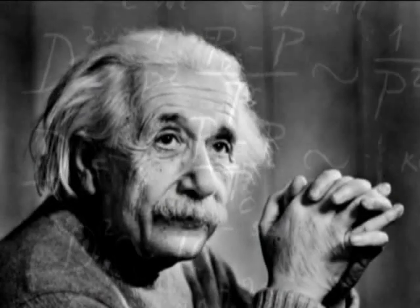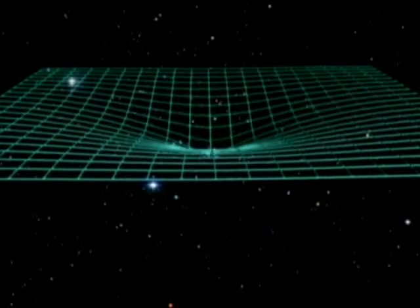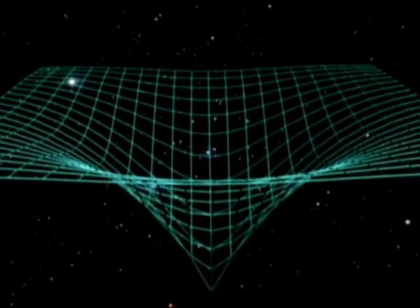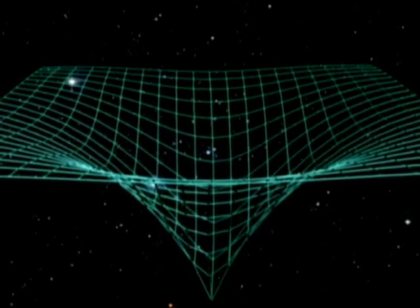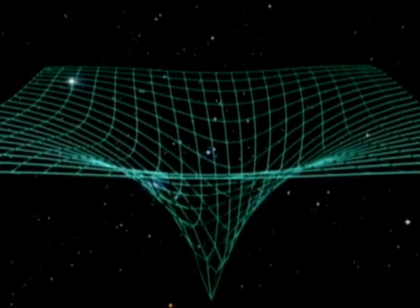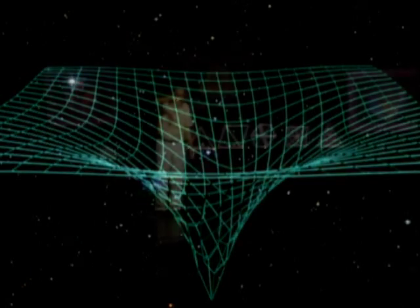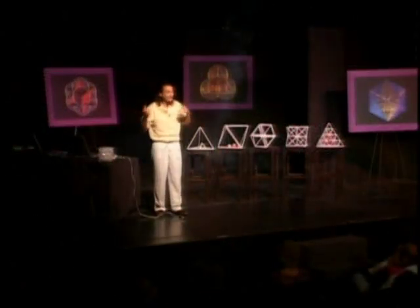So basically Einstein said gravity is the result of space-time curving like the surface of a trampoline. What we say in this paper, yes, and when space-time curves, it doesn't just curve, but it curls, just like water going down the drain, and that generates spin. And that's the source of the spin of all things.